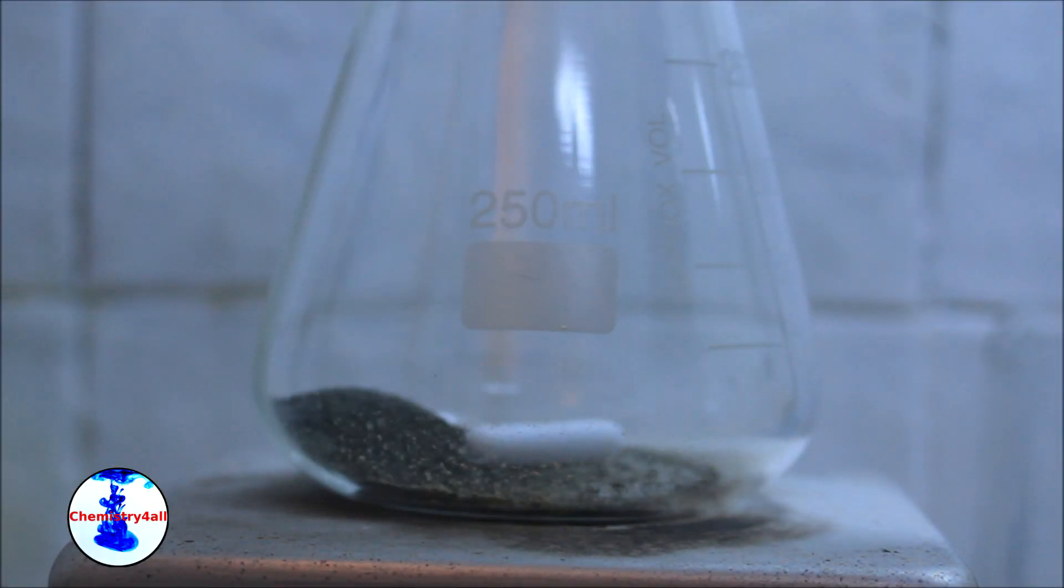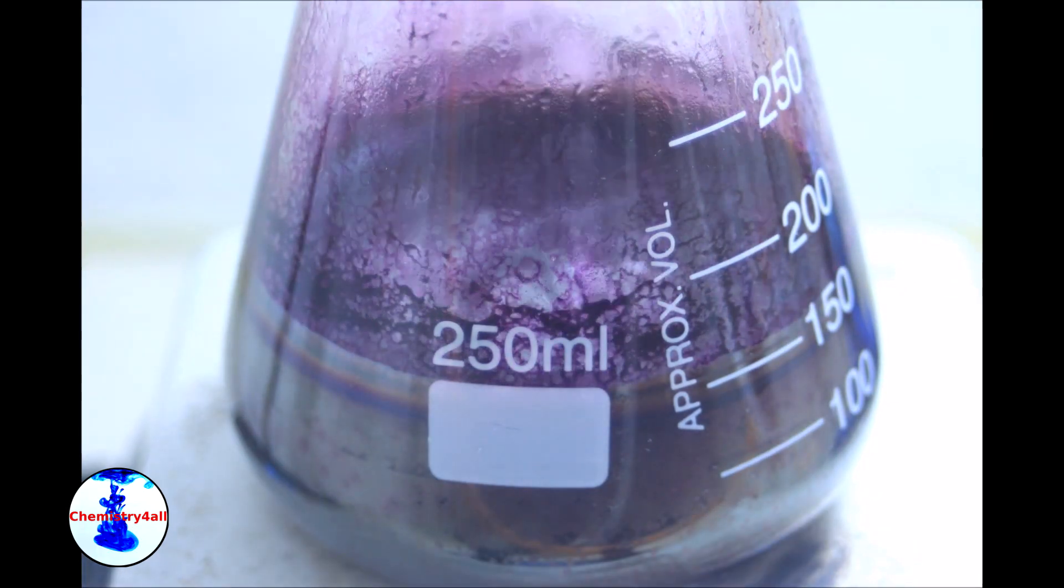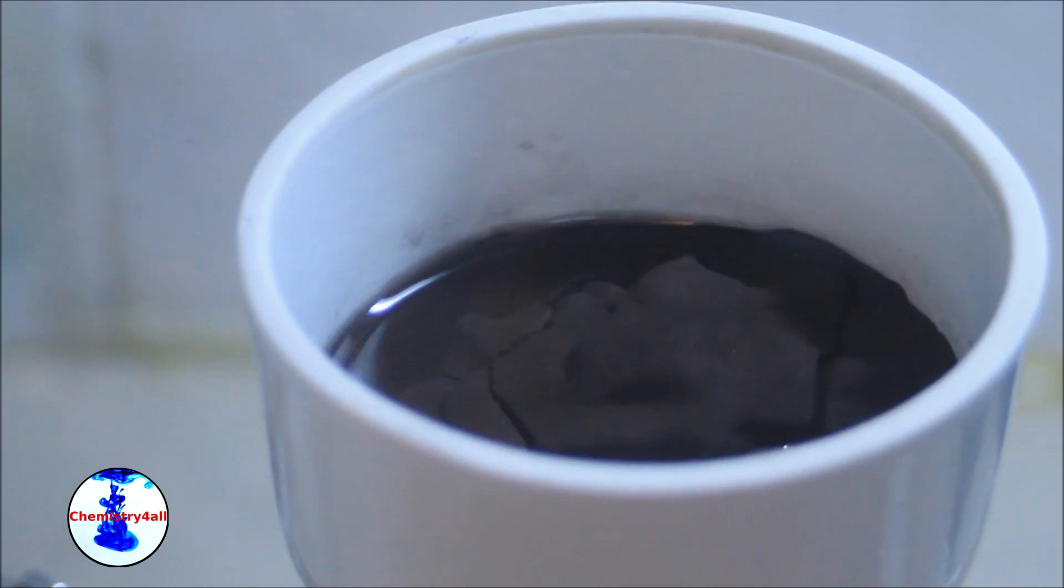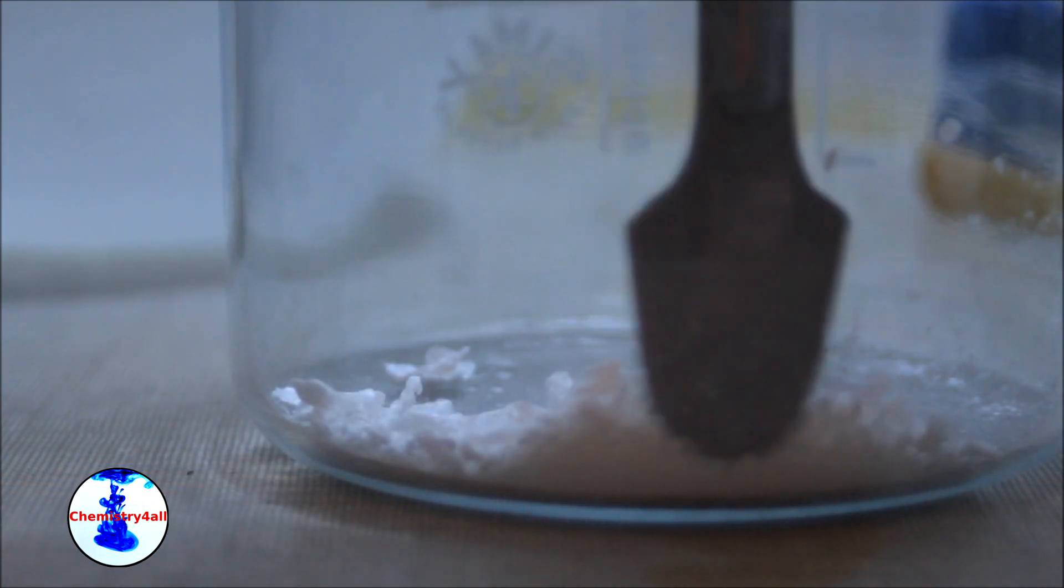Today, we will synthesize benzoic acid starting from toluene that we have obtained in a previous video from a paint remover. In order to do so we will carry out a classic benzylic oxidation of an aromatic alkene using potassium permanganate.